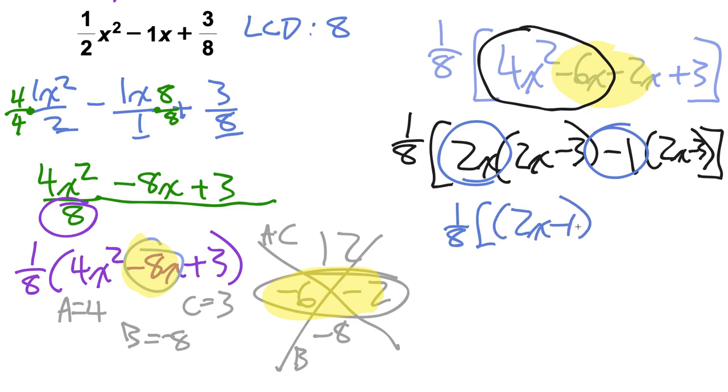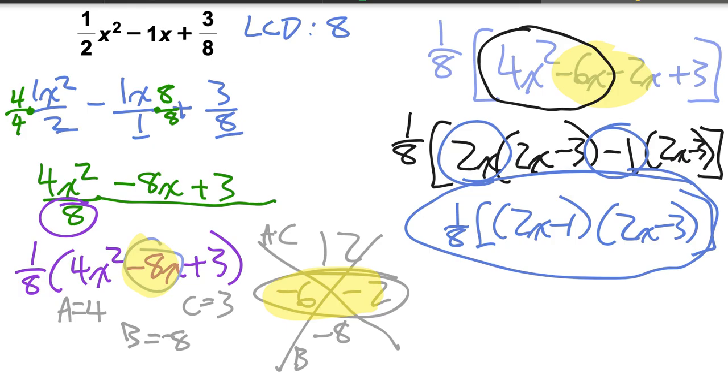2x minus 1 in the first position, and then 2x minus 3. There you have it, you've done it. If this helps you, feel free to like. If it doesn't help you, or even if it does, comment. If there are other types of problems you'd like me to cover, comment and I'll try to oblige as soon as I can. Thanks and good luck in your math endeavors. See you next time.